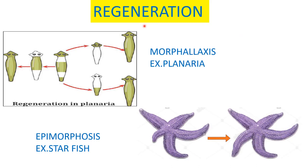Regeneration is the regrowth in an injured region and is of two types: morphallaxis and epimorphosis. In morphallaxis, a good example is planaria, where the whole body grows from a small fragment. Any part of the planaria is capable of giving rise to a new whole organism. This type of regeneration is called morphallaxis.